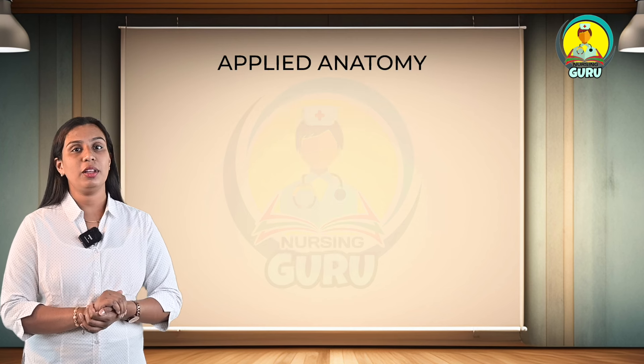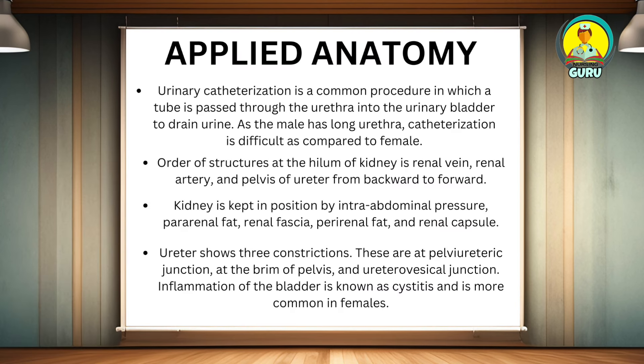Now let's look at the applied anatomy. Urinary catheterization is a common procedure in which a tube is passed through the urethra into the urinary bladder to drain the urine. As the male has a longer urethra, catheterization is more difficult compared to the female. The order of structures at the hilum of the kidney is: renal vein, renal artery, and pelvis of ureter, from back to front. The kidney is kept in position by intra-abdominal pressure and pararenal fat.